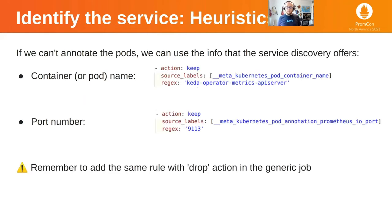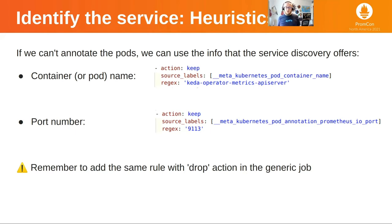So if we cannot annotate the pods, how can we identify that a pod belongs to an application or service? We can use the information that service discovery offers and make some heuristic rules. For example, we can use the container name inside the pod — if there is a pod with a container named KIDA operator metrics API server, we can identify it as a KIDA operator or KIDA API server and make a specific job for it. Or maybe we know the service is exposing port 9113 and is annotated, so we select all pods annotated with prometheus.io/port equals 9113 and create a special job for that.